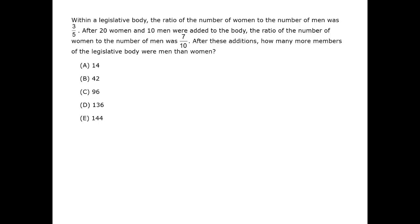We are looking for the difference in men and women after the addition, when the ratio is 7 to 10. This difference can be written as 10n minus 7n equals 3n, where n is an integer.